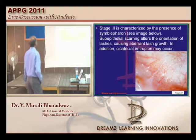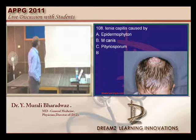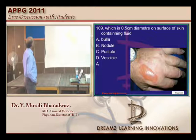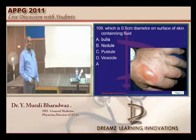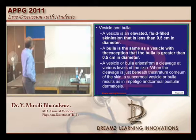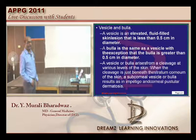Tinea capitis caused by Microsporum is one of the very routine questions. Regarding the size definition: 0.5 centimeter diameter — if it is less than 0.5 cm then it becomes a vesicle. The reference I have is greater than 0.5 cm for a bulla.